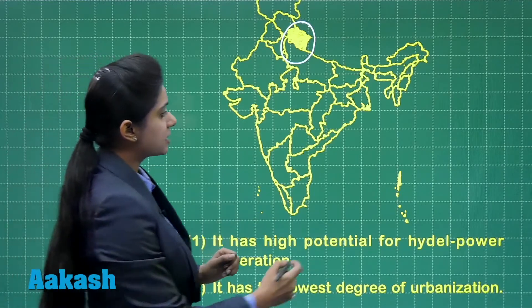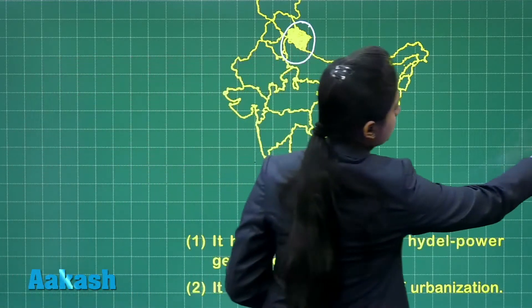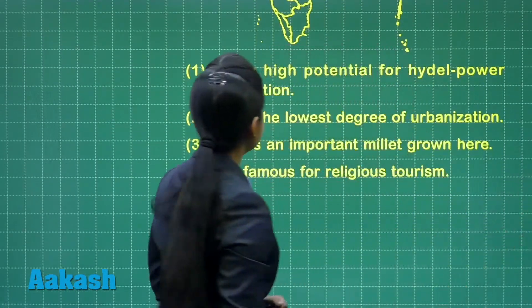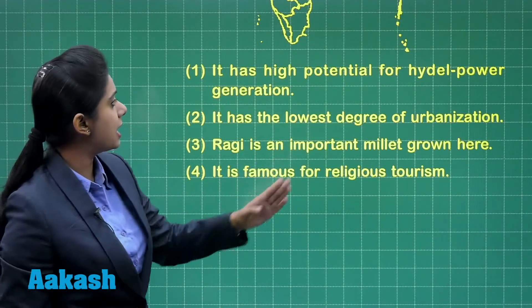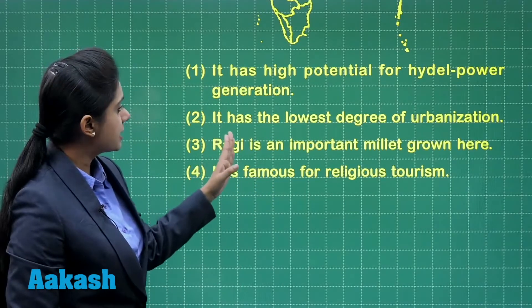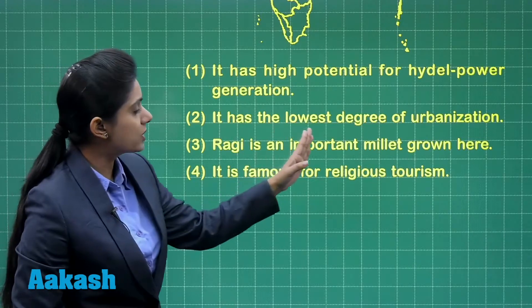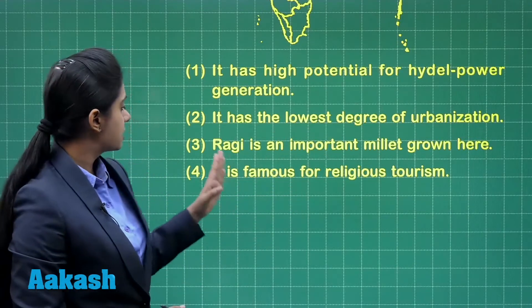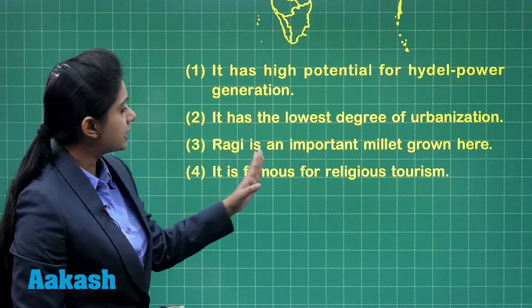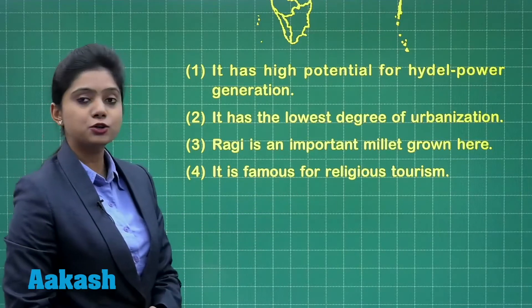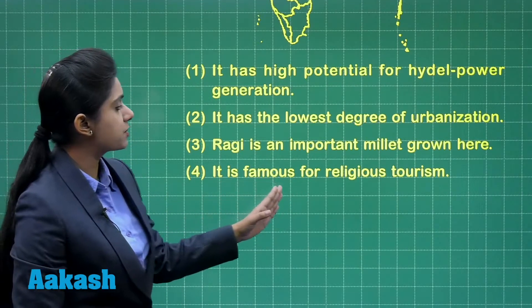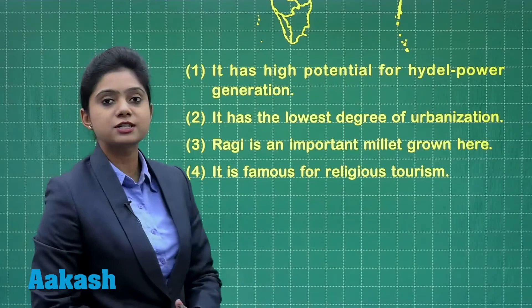Now let's read the statements given to us. Statement number 1 says it has high potential for hydel power generation. Second statement says it has the lowest degree of urbanization. Third states ragi is an important millet grown here. And the last statement says it is famous for religious tourism.